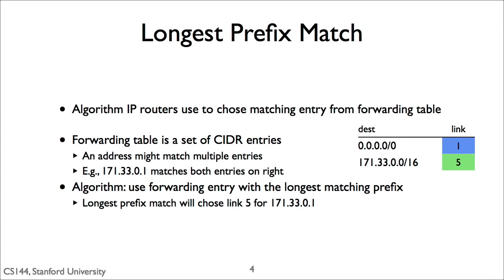For example, in this routing table on the right, there are two entries: one for the default route, which has a prefix of length 0, and one for 171.33.0.0/16.